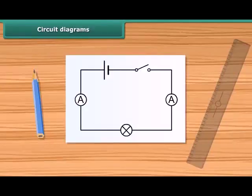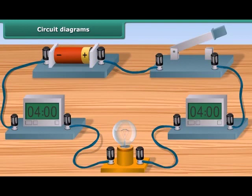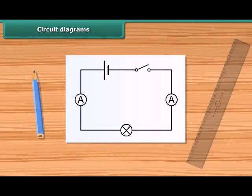A circuit diagram is a simplified representation of an electrical circuit. It is a drawing using standardized symbols of the arrangement, showing how electronic components are connected together.